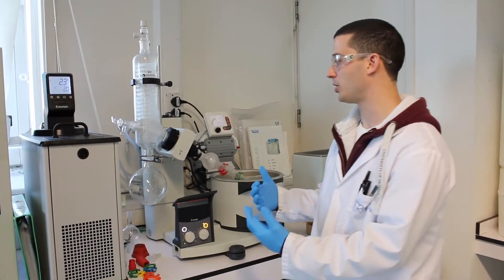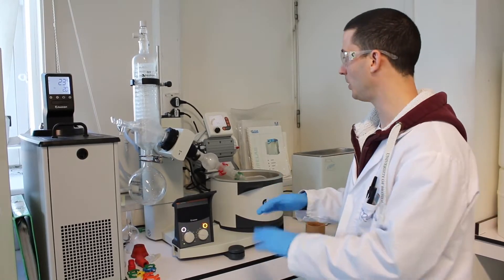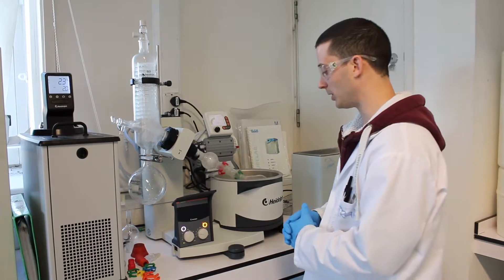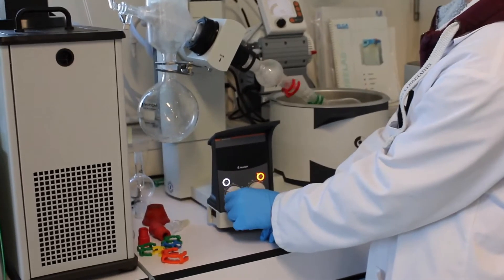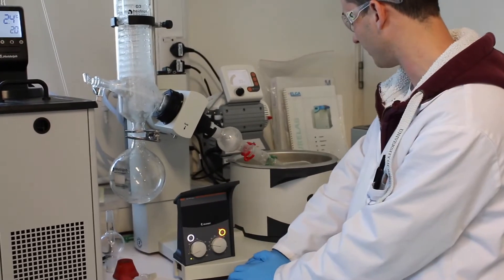So when the operation is completed, this is what you need to do to switch off the instrument and remove the flask from the rotary evaporator. First thing, you want to turn off the spinning and lift up the flask from the bath.